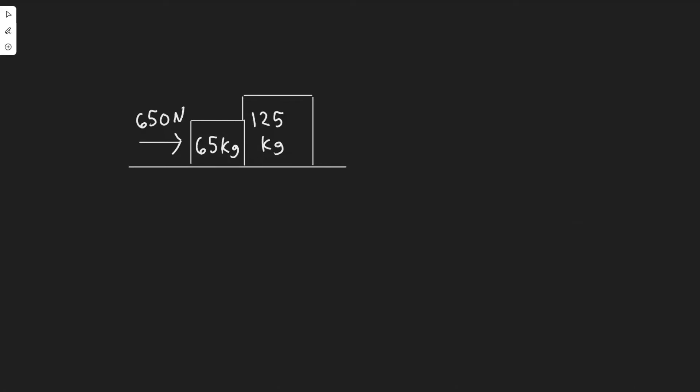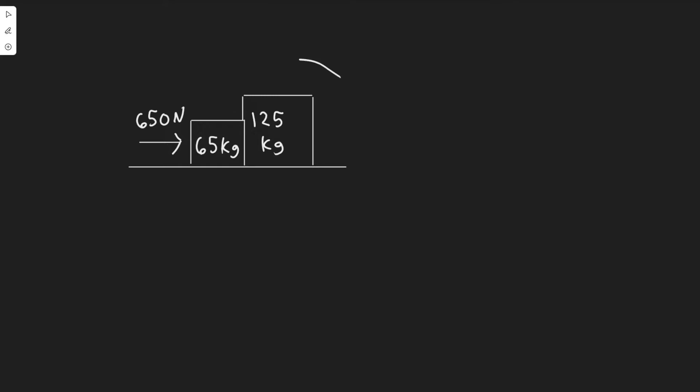In this problem we're told that two crates of mass 65 kilograms and 125 kilograms are in contact at rest on a horizontal surface. We're going to have a 650 Newton force acting on this system. We're going to be solving for a bunch of things. The first thing they want us to do for part A is find the acceleration of the system. Whenever dealing with problems with forces, you want to draw your free body diagram, so let's label the different forces acting on the system.